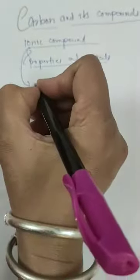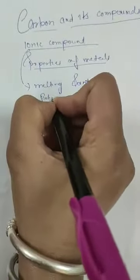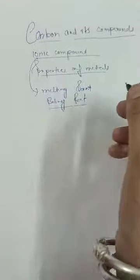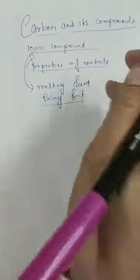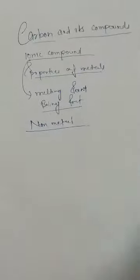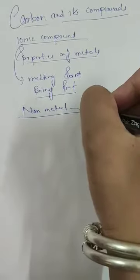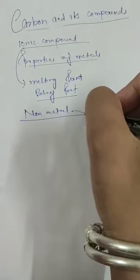Metals have a high melting point, high boiling point, and they are electrical conductive in nature. Now, non-metals are completely opposite from metals — their melting point and boiling point are low, they are not electrically conductive, their density is low, and they are not ductile and malleable.